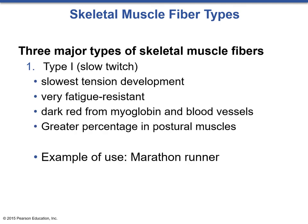Type 1, or slow twitch oxidative fibers, have the slowest tension development. They are very fatigue resistant and have a dark red color from myoglobin and heavy amounts of blood vessels. There's a greater percentage of slow twitch fibers in postural muscles, as they are consistently used to maintain overall body position. An example of use for slow twitch fibers would be a marathon runner, as this is going to be very oxidative, long-duration activity.